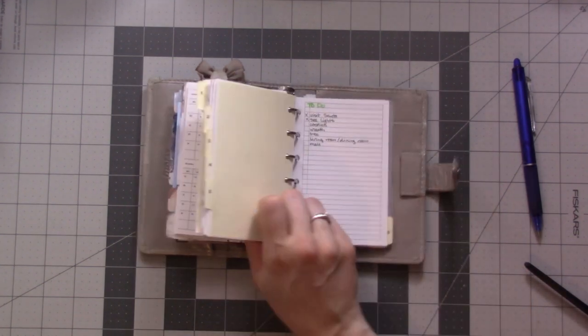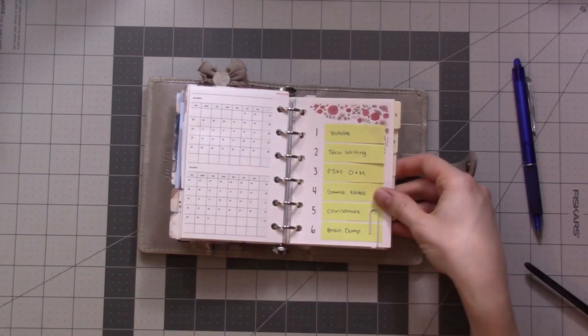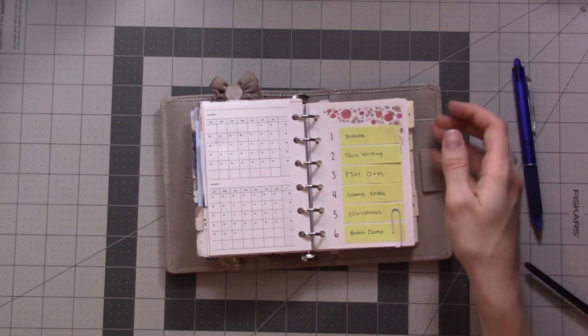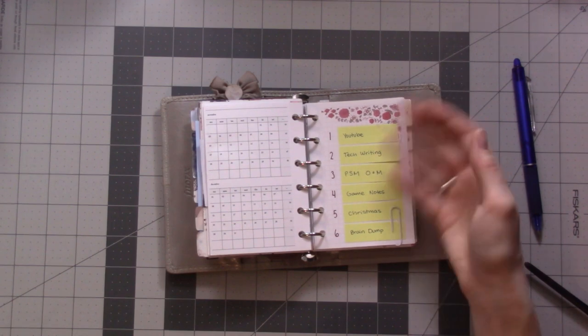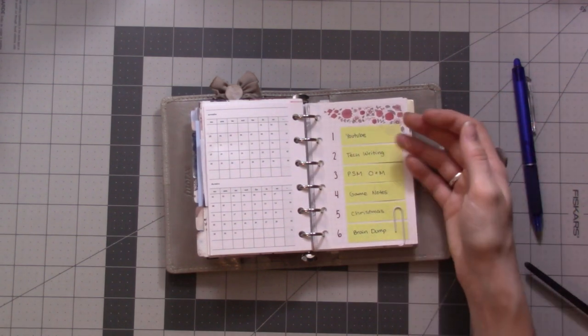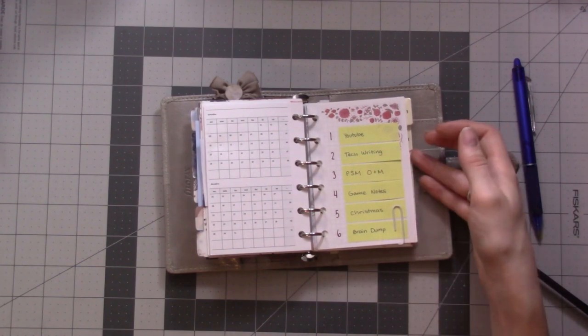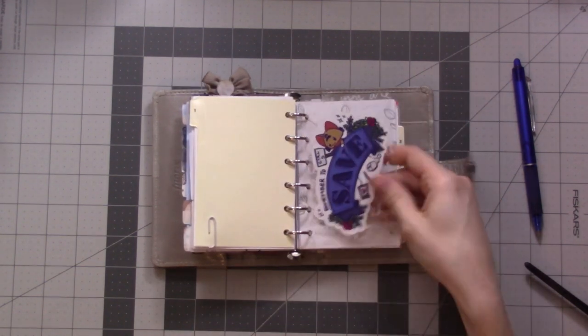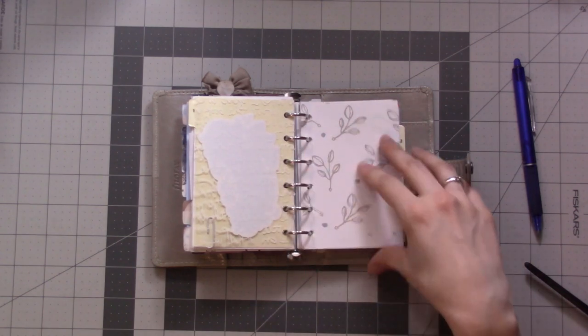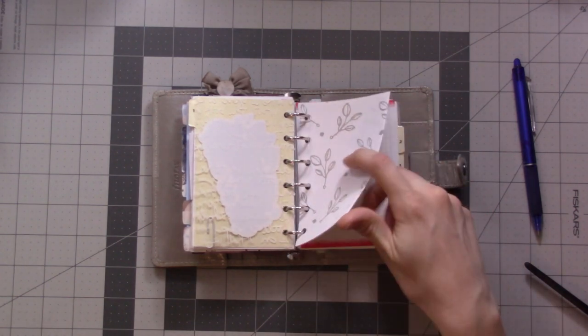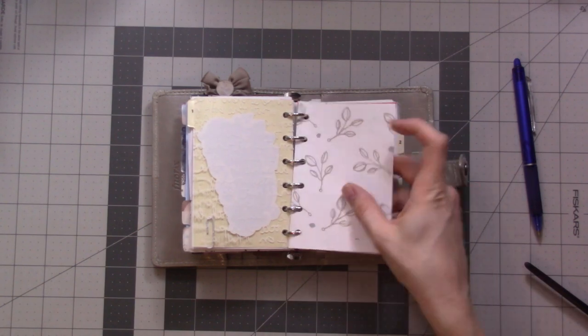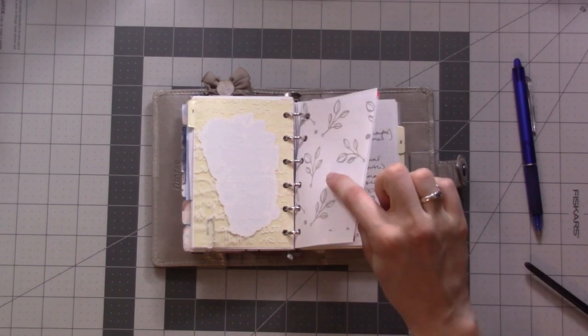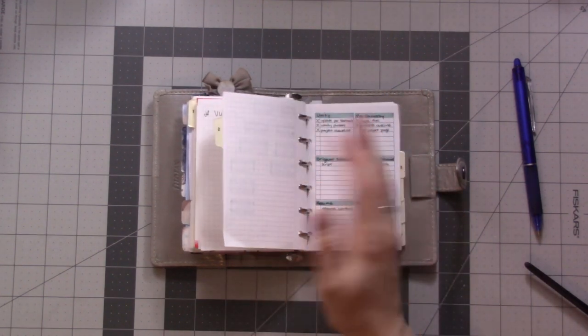I've got Christmas lists of things to do and stuff. Here I've got some game notes. Some of these can be consolidated or removed probably if I need a section, but I figured I may as well spread out. This is a project I'm working on so it has its own section. Then all my YouTube stuff is in this section. This is my content calendar and then video ideas and then some video notes and some other things that I don't really want to show you.